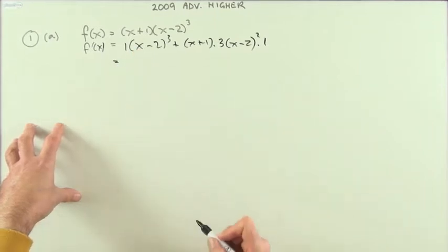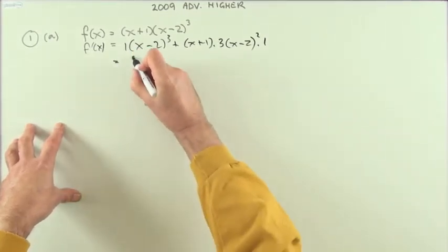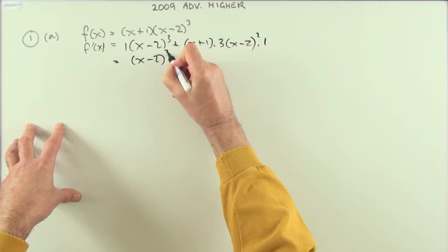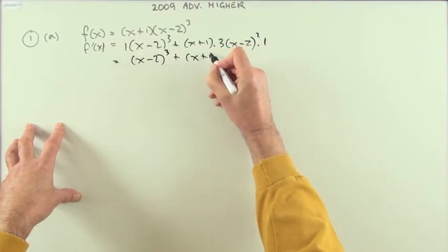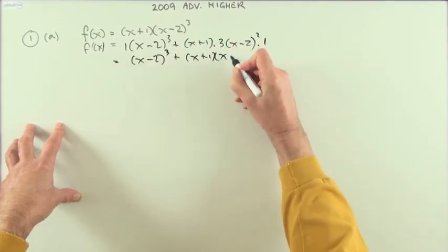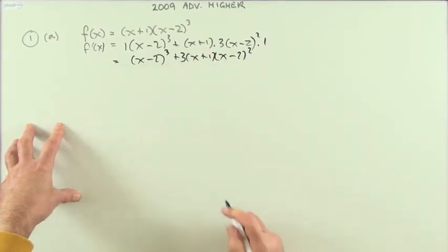And then, tidying that up, I suppose, well I don't really need to use another line, but I've said it, so I'll just write it down, x plus 1 times x minus 2 squared with that three at the front.